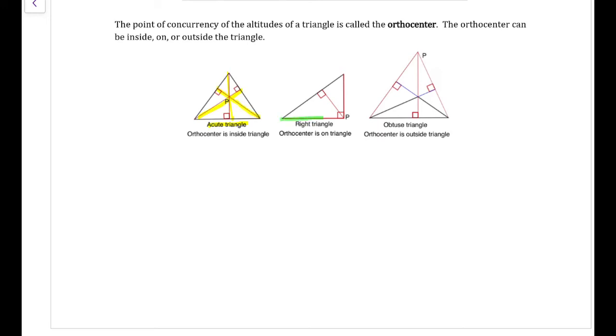If we take the vertex and make a 90 degree angle with the opposite side, that would be the orthocenter. Acute triangles, all of their orthocenters are on the inside of the triangle. Right triangles, orthocenters are on the triangle. And obtuse triangles, the orthocenter is outside of the triangle.